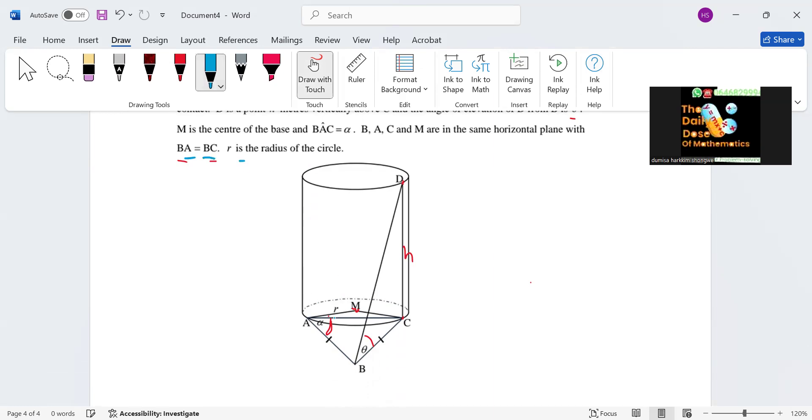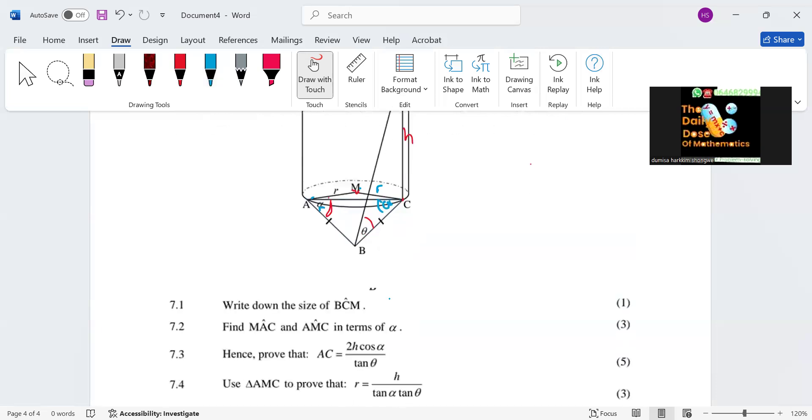BA which is this one, they say this one is r. BA is equal to BC, r is the radius, so from A to M is going to be r, meaning from M to C is also going to be r. These are some of the things that we can add. If this is alpha starting from here to here, we also expect it to be alpha.